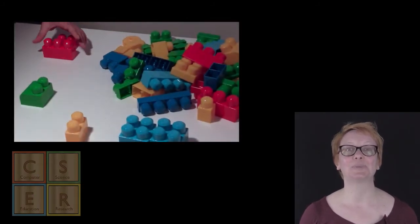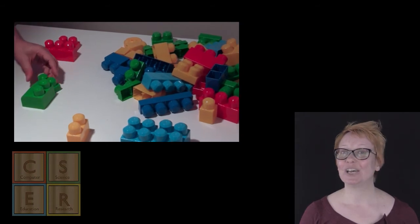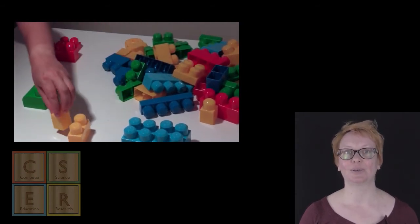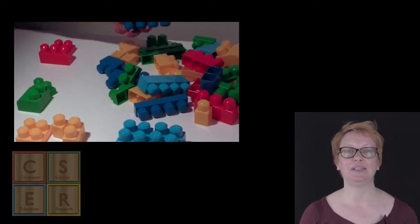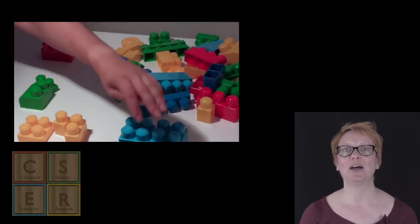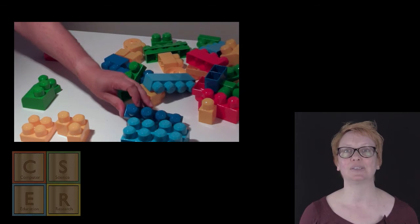In this example we have the problem of sorting a group of blocks by colour. The data that we need in this case is the colour of the blocks. We can see the sequence of steps: picking up a block, identifying its colours, and then working out which pile of the already sorted blocks it belongs to.